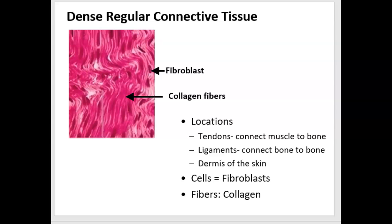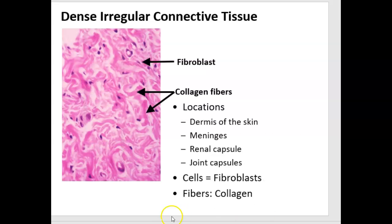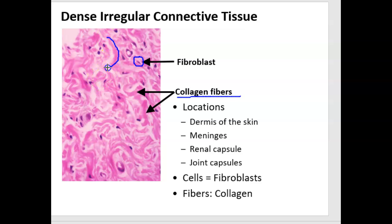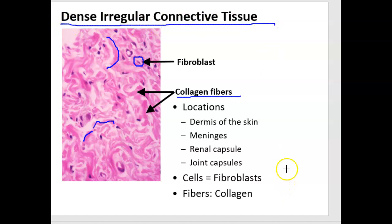Now dense irregular connective tissue is similar in composition to dense regular — there are still fibroblasts that secrete collagen fibers that are very strong. The difference is the arrangement of the fibers. The fibers are a little bit looser and kind of swirly, not linear and tightly organized. Dense irregular connective tissue is usually forming a covering over an organ, like over the kidney we have a renal capsule, or around joints we have a capsule, or the meninges.